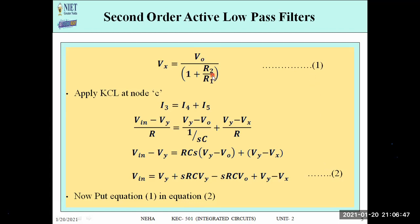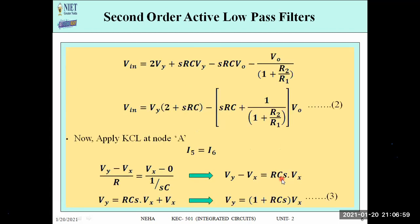We take the value of Vx from equation 1 and substitute it into equation 2, eliminating the Vx term. After this substitution, we have an equation with V0, Vin, and Vy. To find the transfer function V0/Vin, we also need to eliminate Vy, so we must calculate Vy separately.